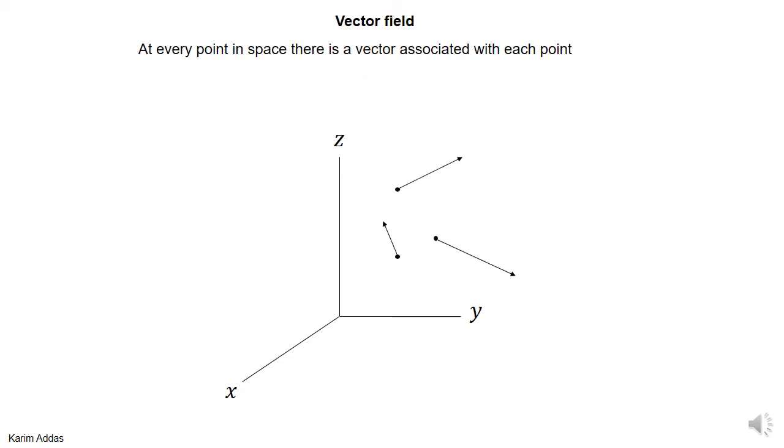The other kind of field we have is a vector field. And in this case, we associate with every point in space a vector.